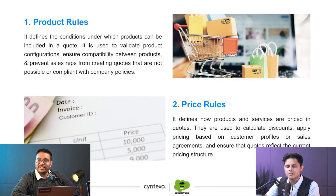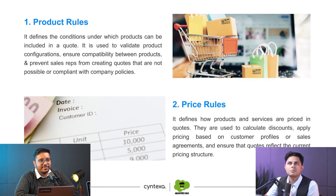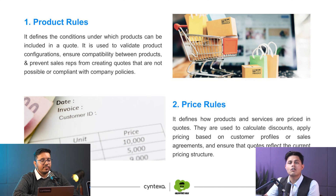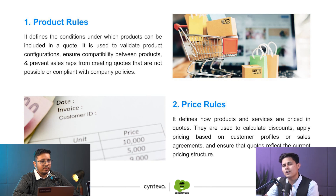Product rules define the conditions under which products can be included in the quote. That means whether a particular product is compatible with another product, whether a product can be sold alone or requires other accessories or peripherals to go along with it — it cannot be sold as a sole product. All of these things need a lot of configuration, and where we do all of that configuration is in the product rules.